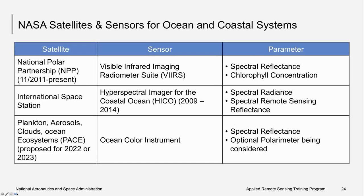Other ocean color satellites include the Suomi National Polar-orbiting Partnership, or NPP, which hosts the Visible Infrared Imaging Radiometer Suite, or VIIRS. This sensor is used for spectral reflectance and to infer chlorophyll concentration. The International Space Station hosted the Hyperspectral Imager for the Coastal Ocean, or HICO, for five years from 2009 to 2014 — a high-spectral resolution imaging spectrometer. Finally, the Plankton Aerosols Clouds Ocean Ecosystems, or PACE, sensor is under development and scheduled to launch in 2022 or 2023.